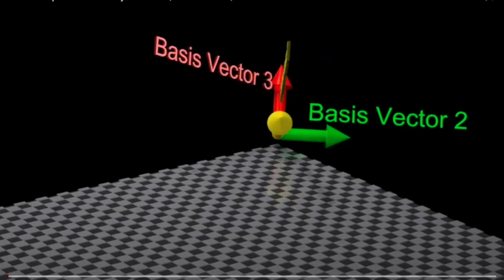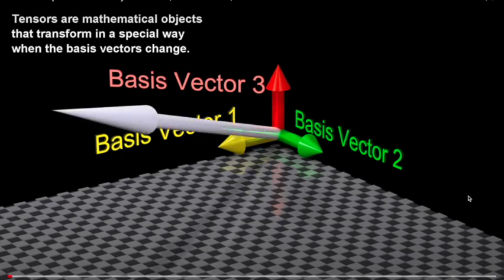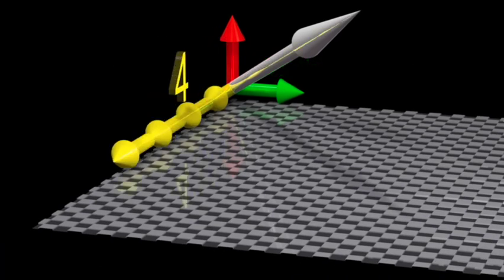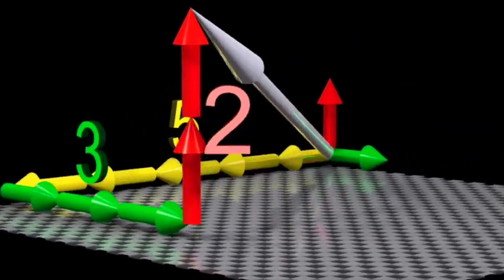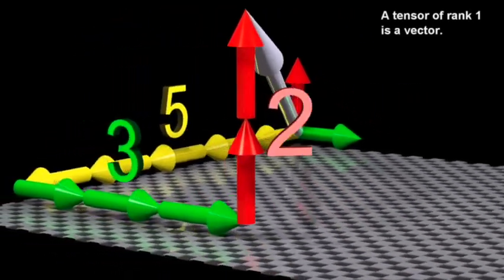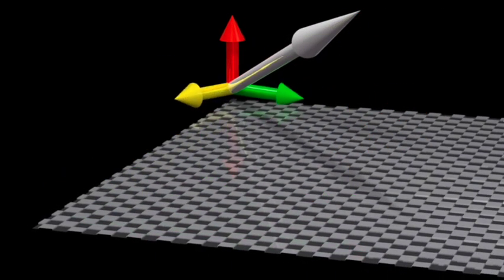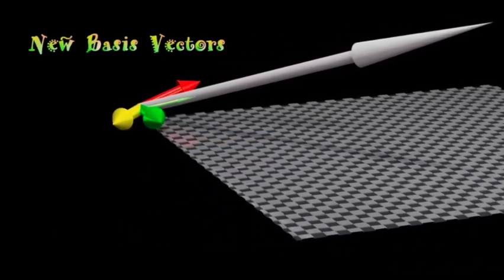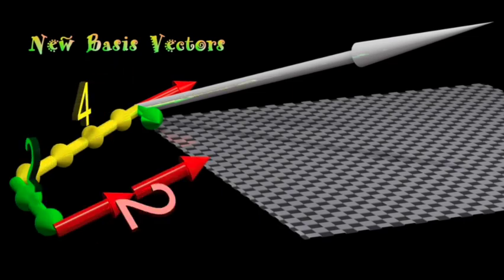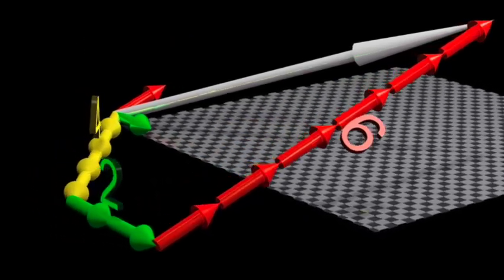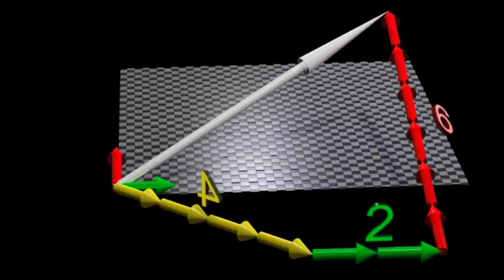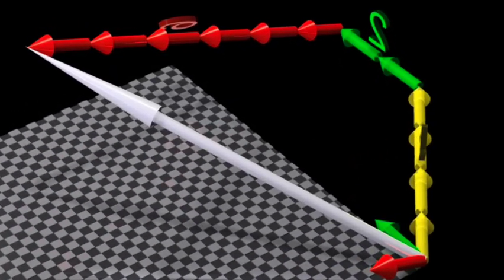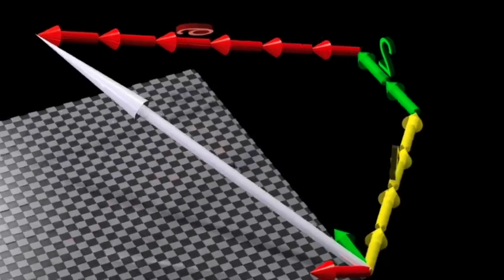Let's watch this animation, which is another example of how a vector can be described in multiple ways. Initially we have the normal x, y, and z coordinates and we describe the vector using those. Then if we change our coordinates — call them a, b, and c — we have the same vector but described differently with the new coordinates. As you can see, the vector did not change, but as the coordinates changed the components used to describe the vector also changed — the object was invariant but the components changed in a special, predictable way.